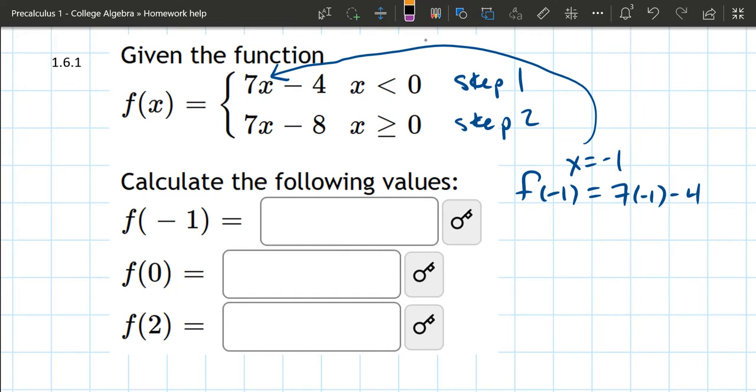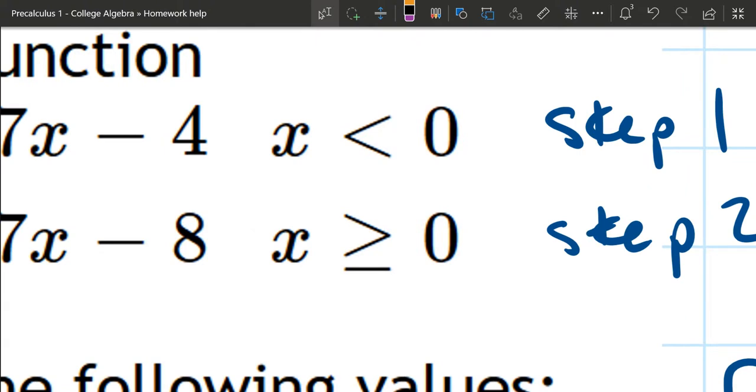Here we have f of 0. So x is 0. Zero is a little bit tricky because it's kind of in between, but it's not actually in between. If we look closely, x equals 0, where is that going to happen?